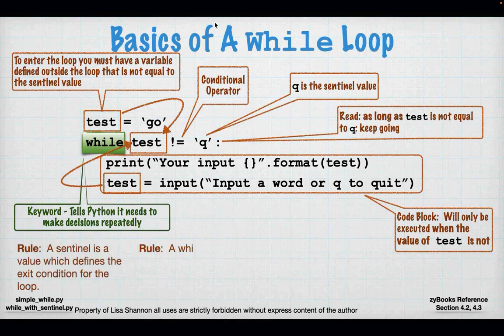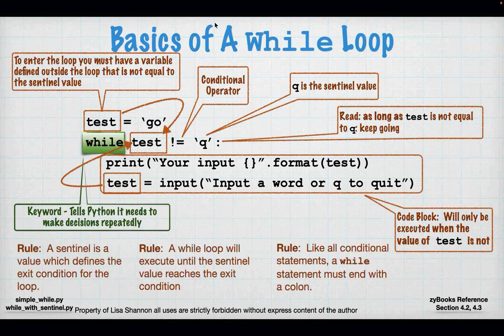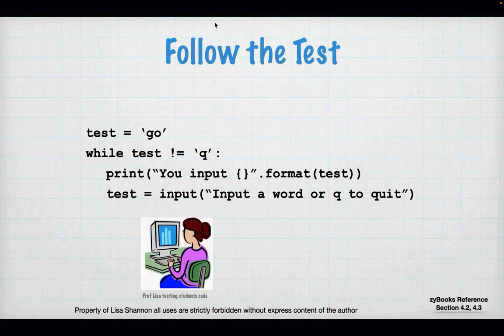Let's look at a few rules. The sentinel is a value which defines the exit condition for the loop. The while loop will execute until the sentinel value reaches the exit condition. Like all conditional statements, a while statement must end with a colon. Any time you make a decision in Python, you have to end that decision with a colon. Let's follow the test through the code: `test` equals `go`, while `test` is not equal to the letter Q.